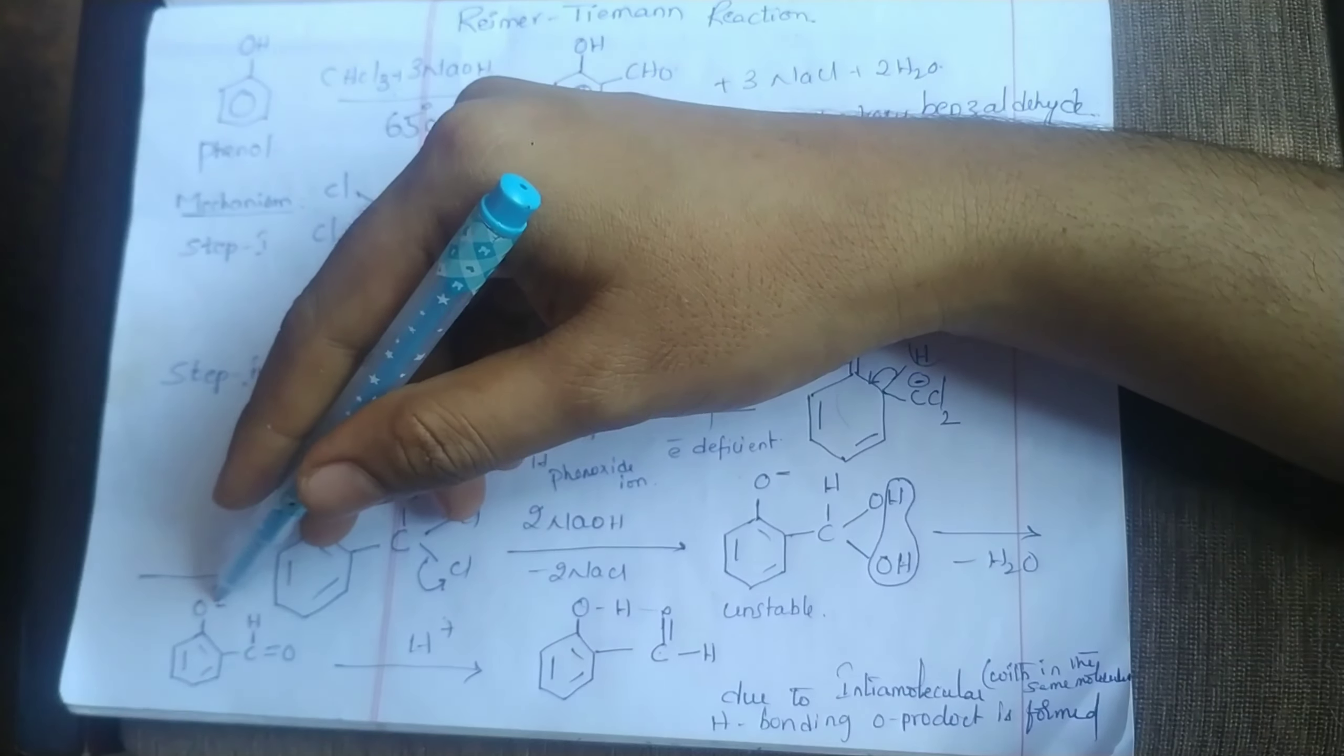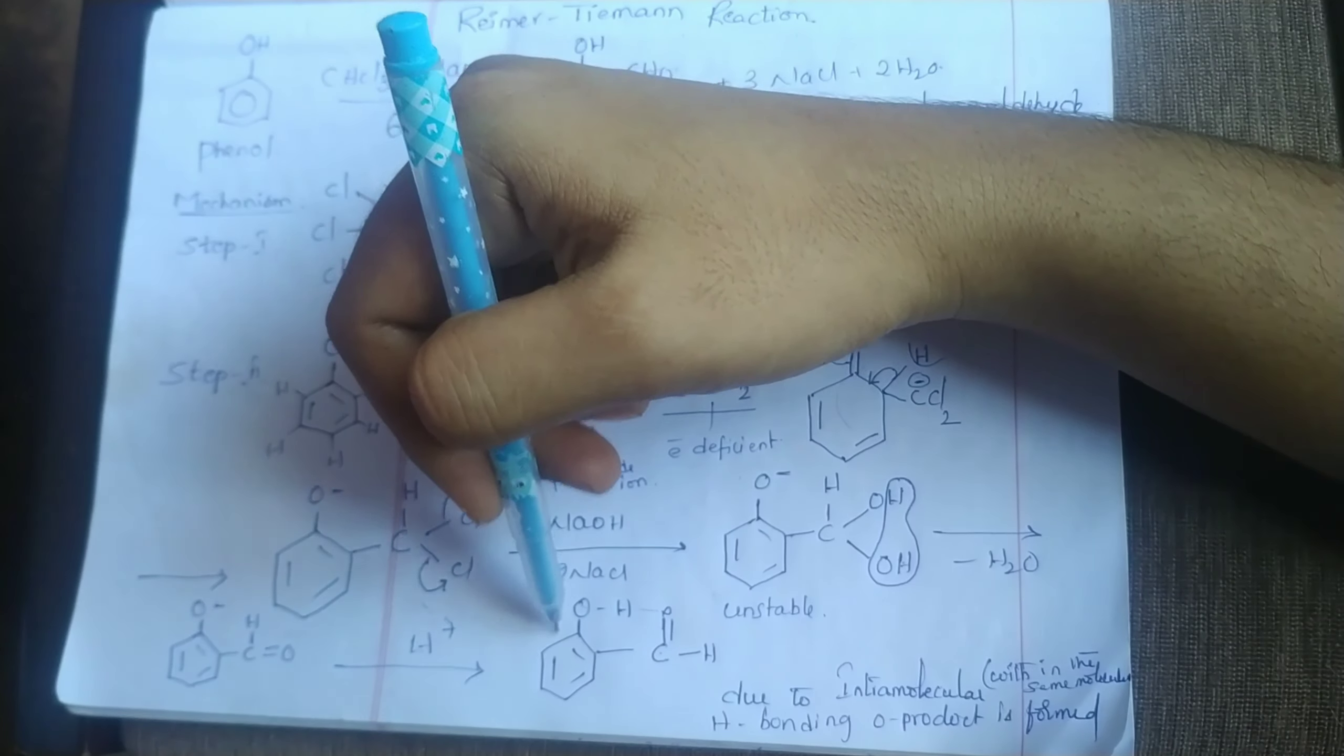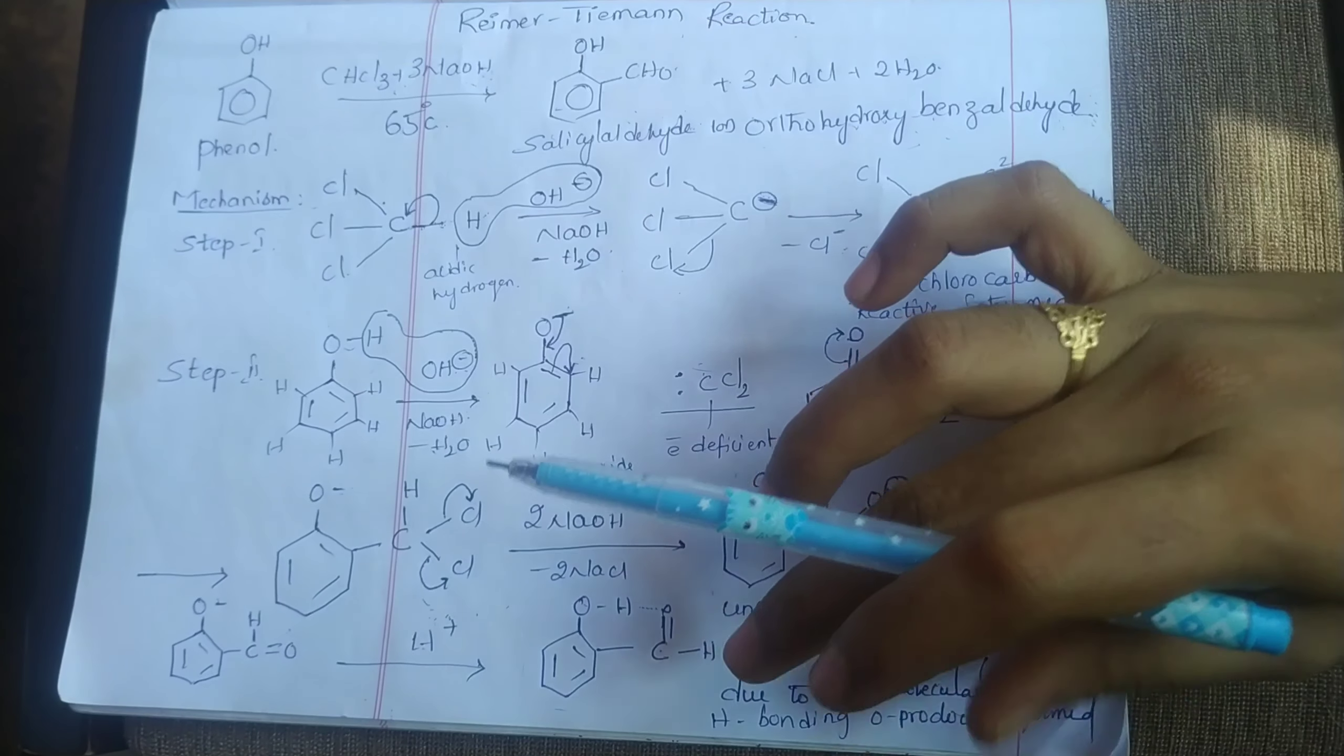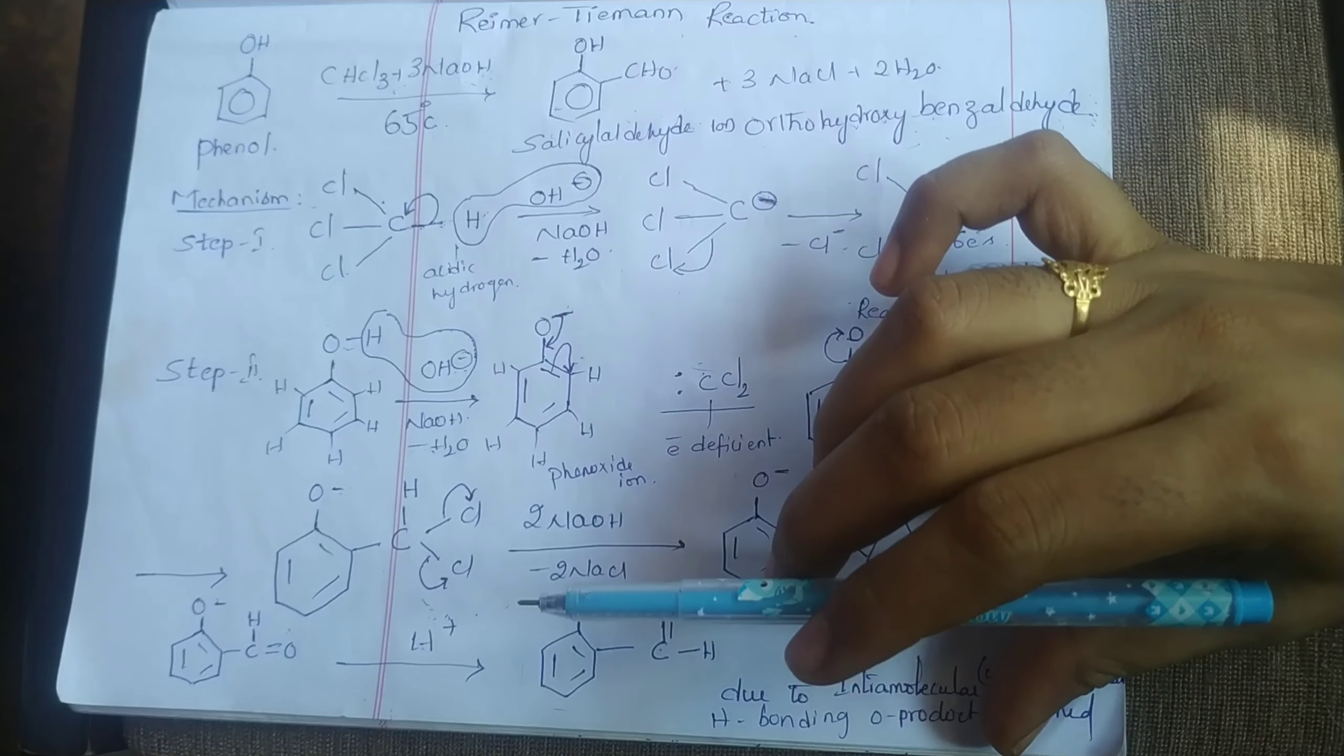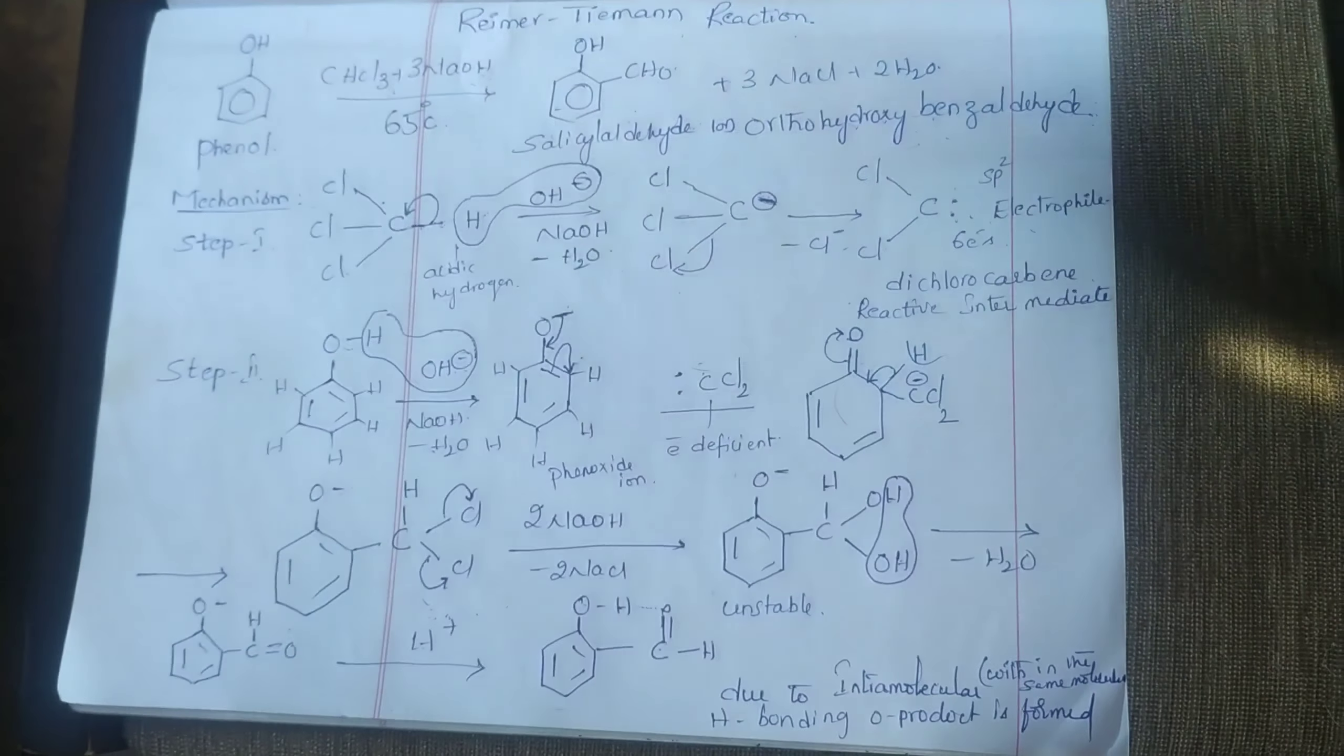And then after that, acidification is done—that means addition of H plus. So finally our product salicylaldehyde is formed. This is the major product because due to intramolecular hydrogen bonding, the ortho product is more stable. Hydrogen bond formed within the molecule is called intramolecular hydrogen bonding. Thank you so much for listening.